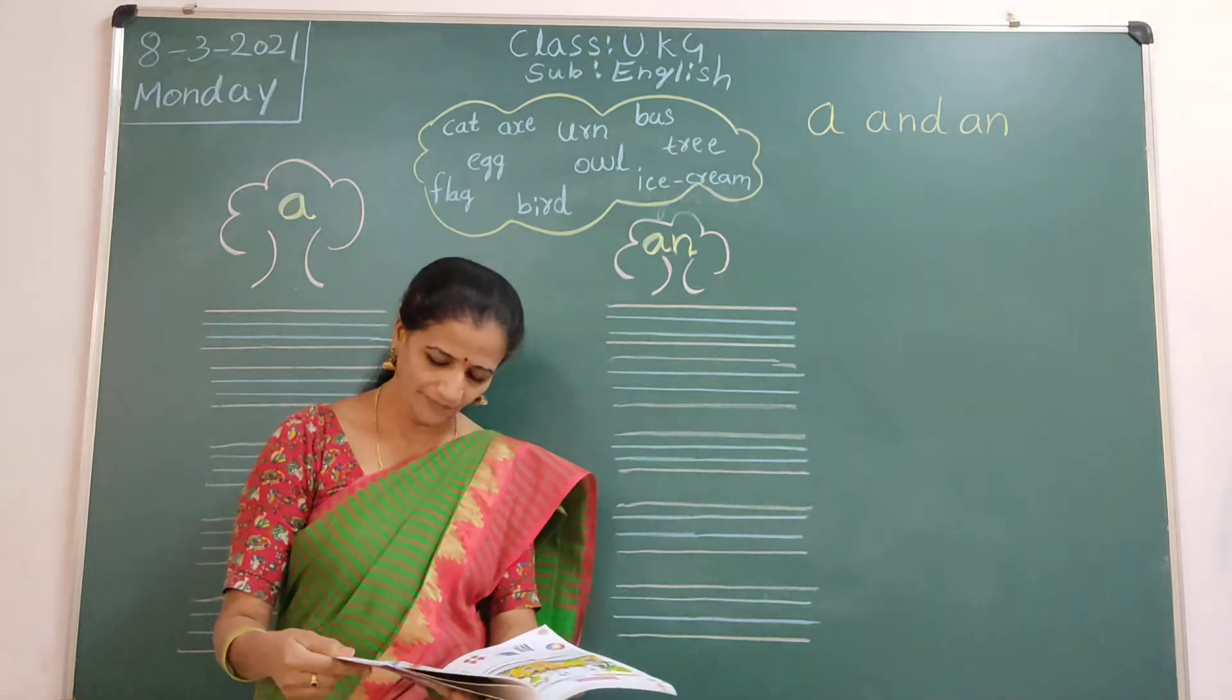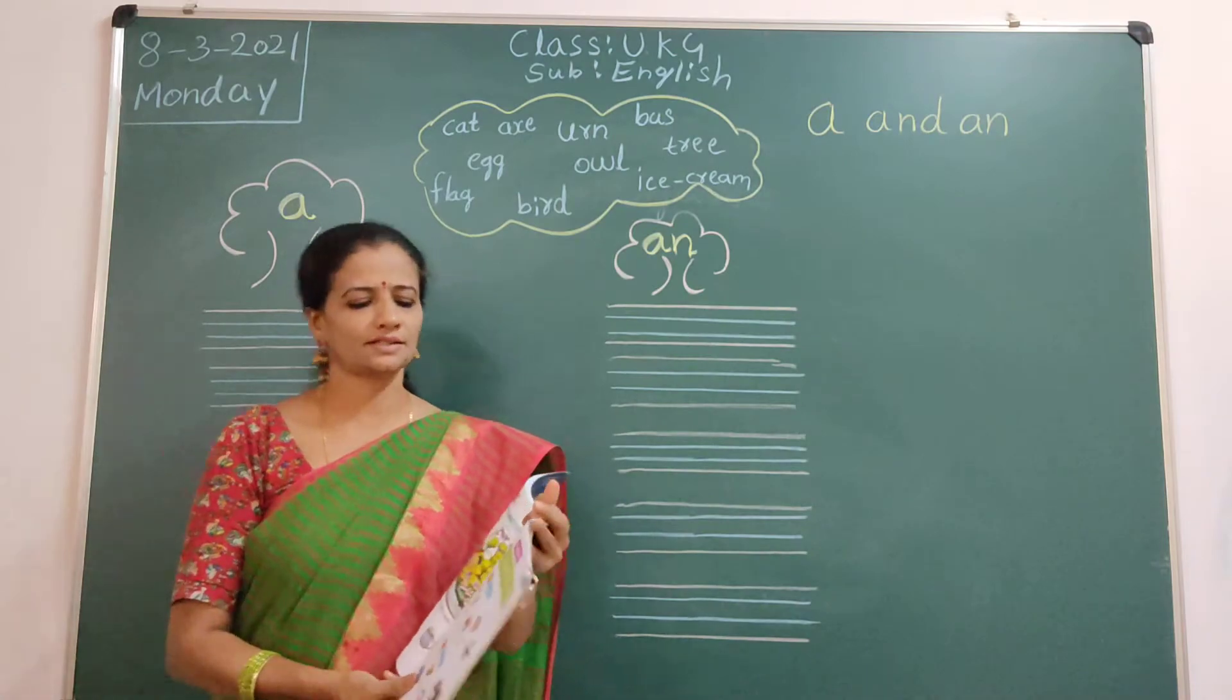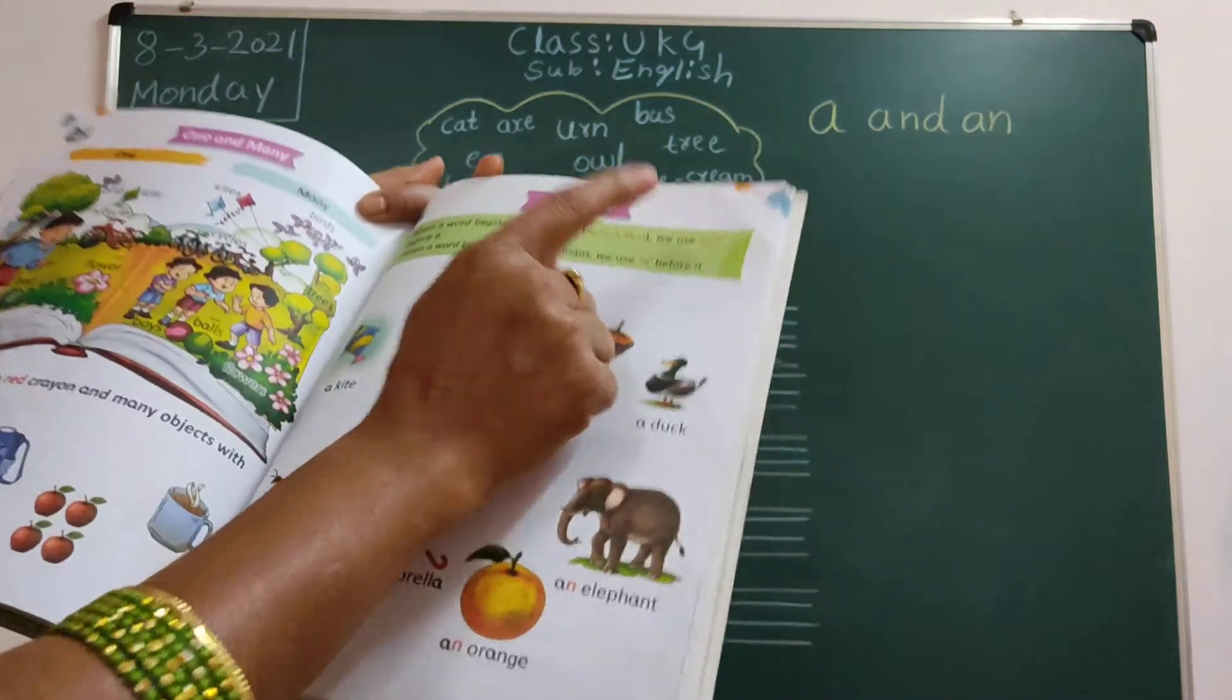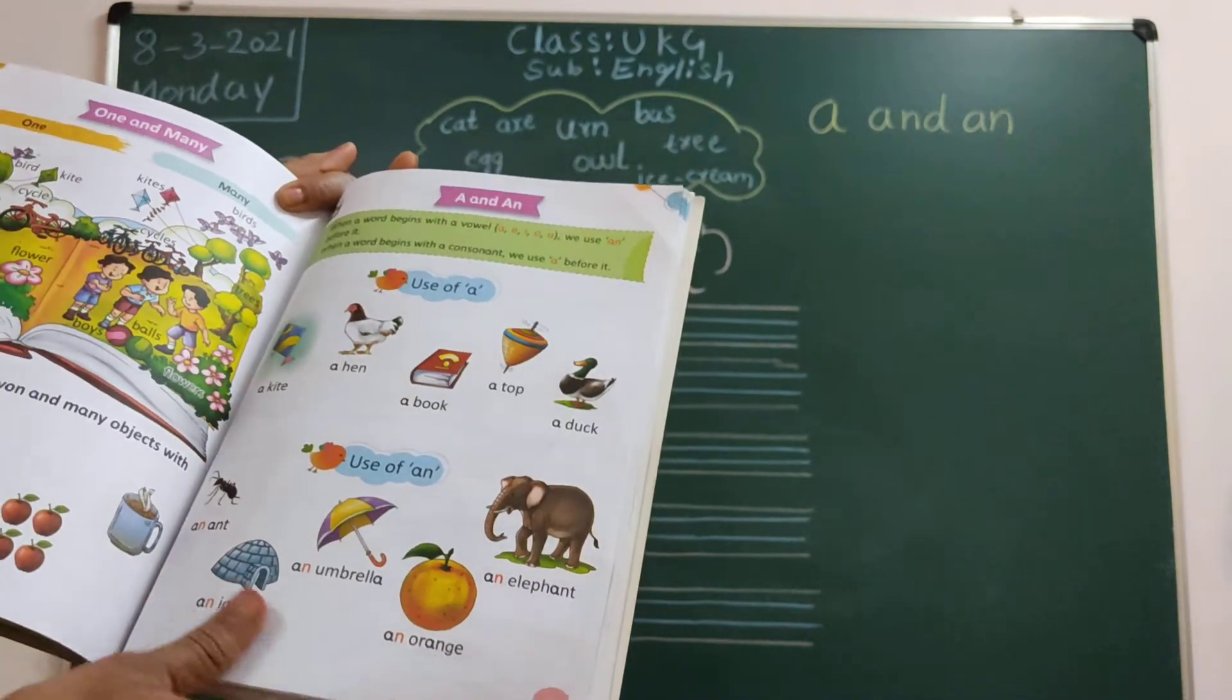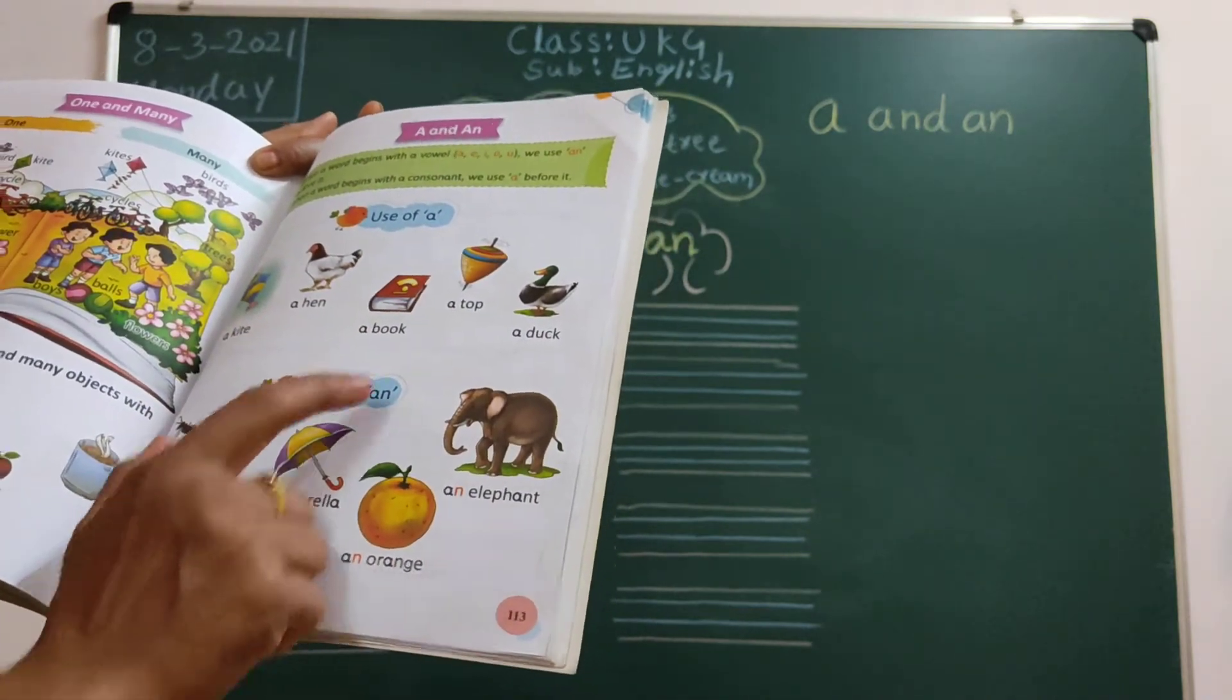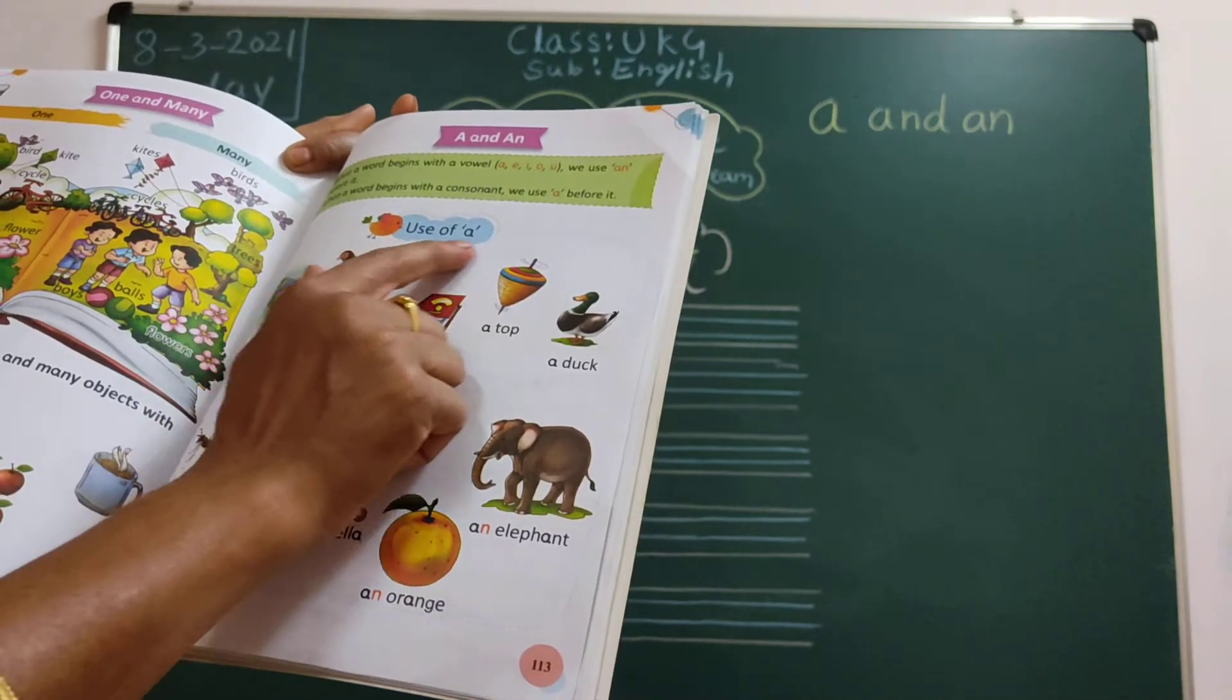So take out my English textbook. See here. A and An. So when word begins with a vowel, we use An before it. When word begins with a consonant, so we will use A before it.